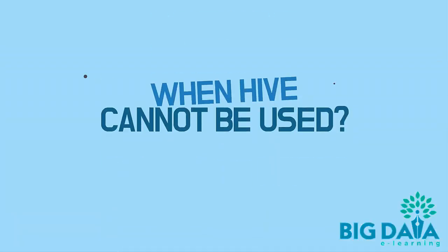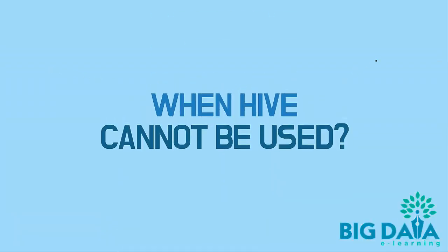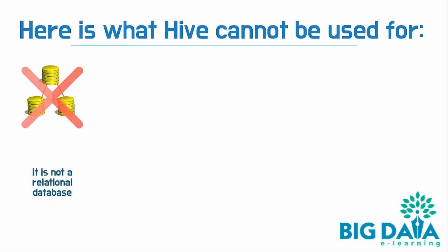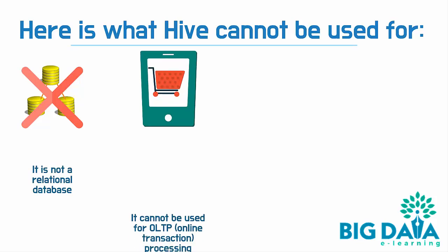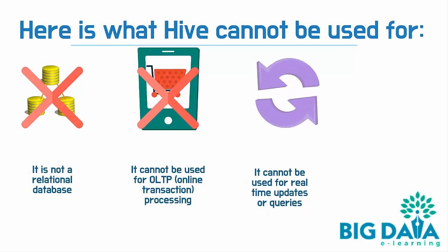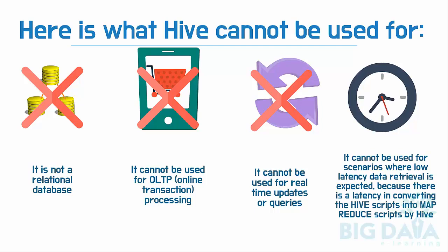When Hive cannot be used: It is not a relational database. It cannot be used for OLTP — online transaction processing. It cannot be used for real-time updates or queries. It cannot be used for scenarios where low-latency data retrieval is expected, because there is a latency in converting the Hive scripts into MapReduce scripts by Hive.